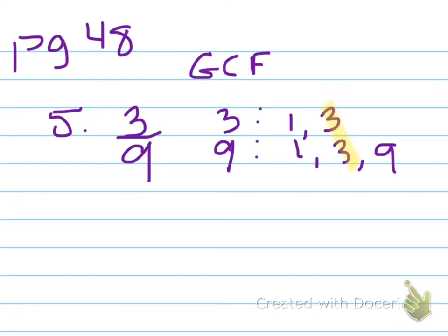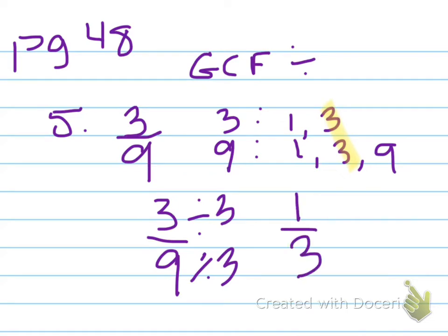So when we use the GCF, it means divide. You take 3 ninths, divide the top by 3 and the bottom by 3, and you get 1 over 3 because 3 divided by 3 is 1, 9 divided by 3 is 3.